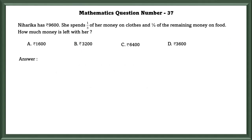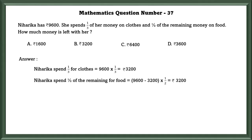Mathematics question number 37. Niharika has 9,600 rupees. She spends 1/3 of her money on clothes and 1/2 of the remaining money on food. How much money is left with her? The amount she spent for clothes equals 9,600 into 1/3, which equals 3,200. And the remaining she spent for food. In order to find the remaining, we subtract the total from how much she spent on clothes: 9,600 minus 3,200 into 1/2 equals 3,200. So total money she spent equals 3,200 plus another 3,200, which equals 6,400. To find how much money is left with her, we subtract the money she spent, which equals 3,200.